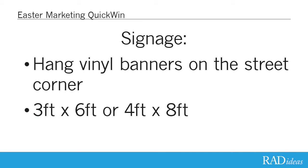So when you think about signage, the most cost-effective way is to hang vinyl banners on the street corner. There are several different types of vinyl available for this. Because it's a relatively short lifespan, you don't have to go with the super expensive kind. Your best options are going to be three foot by six foot, or four foot by six — even four by eight foot is a great size. Those are large enough that you can get the lettering really tall, bold, and legible so that people can read it as they're flying down the street at 35 or 40 miles an hour.